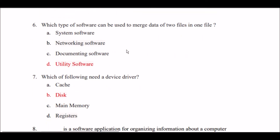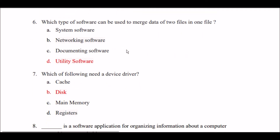Next question: Which type of system can be used to merge data of two files in one file? Option A: system software. Option B: networking software. Option C: documenting software. Option D: utility software. The right answer is Option D — utility software can be used to merge data of two files in one file.